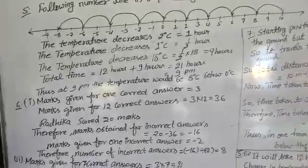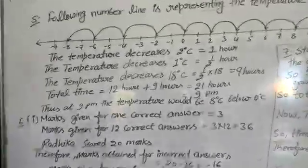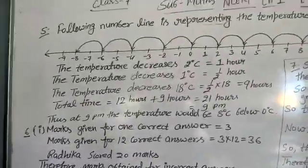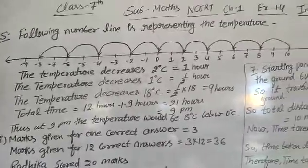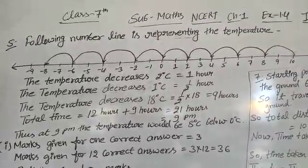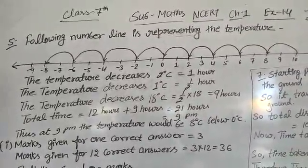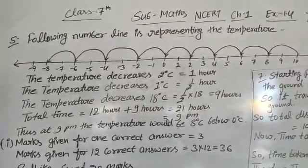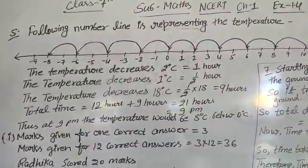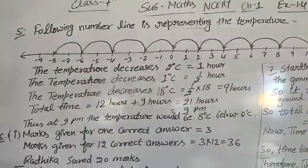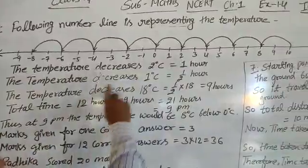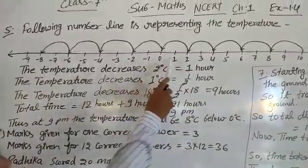Then it decreased. If it is 2 degrees Celsius per hour, at midnight it will be less than 50 degrees. Then at 8 degrees Celsius, it will be less than 10 degrees Celsius above 0. Now we have understood with the help of a number line.